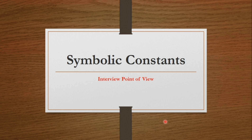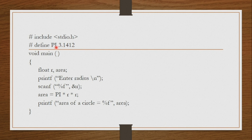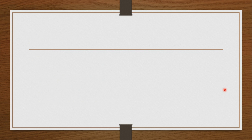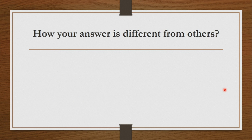For example, take symbolic constants — a very simple concept. Almost 99% of students give the standard answer for this question. But how should you be in the 1% basket? That is very important. So each and every concept here I explain from an interview point of view. Observe: hash define pi 3.1412 — wherever pi is used, it will be replaced with 3.1412. This is the concept of symbolic constant, where pi is considered a symbolic constant. In an interview, how is your answer different from others?